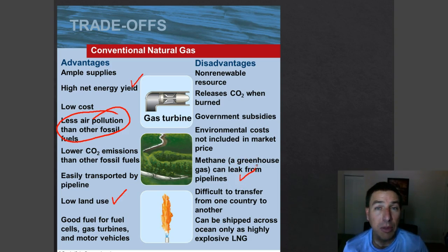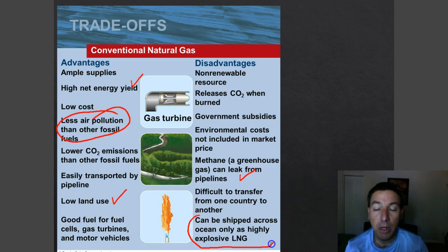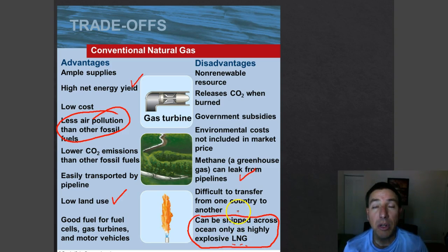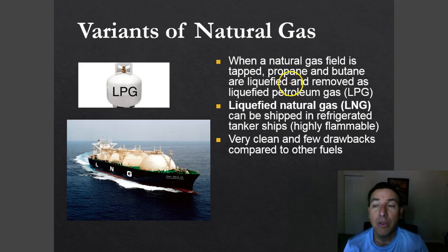What are some disadvantages? Methane is a greenhouse gas — when it gets into the atmosphere it can increase the greenhouse effect and lead to climate change. Also, natural gas is very difficult to ship across oceans. It has to be liquefied into liquefied natural gas (LNG), transported in a highly pressurized form that is very highly explosive and dangerous.